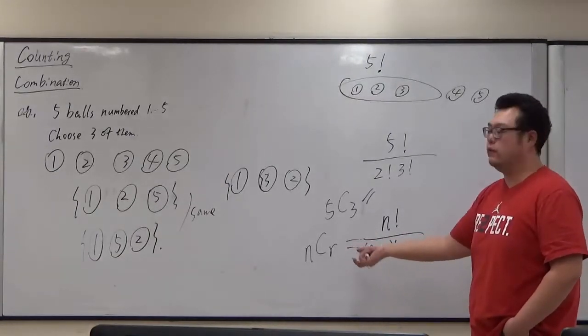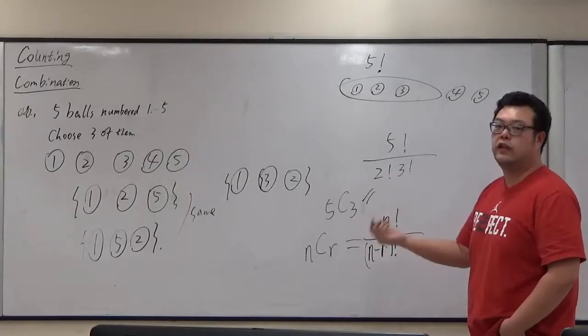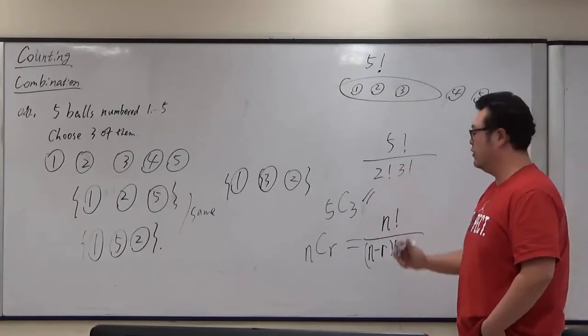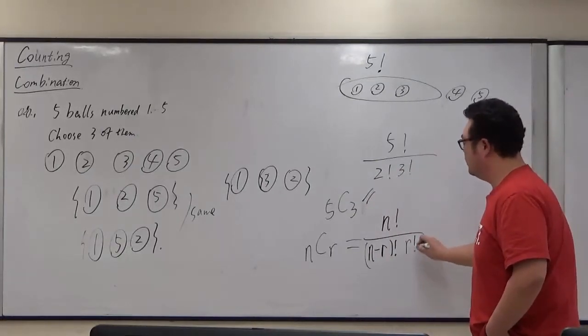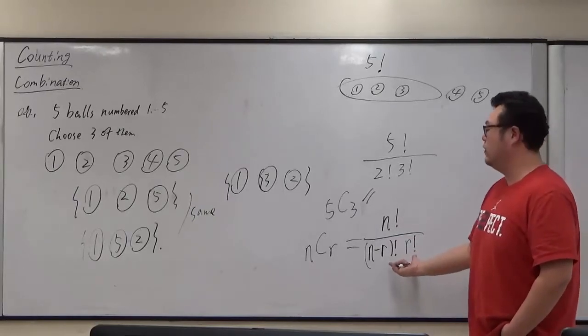And also, even for the objects we're choosing, those r objects, we also do not care about the order. We just need a set, but we do not arrange that. So also, we need to divide the r factorial over there. So that is the formula.